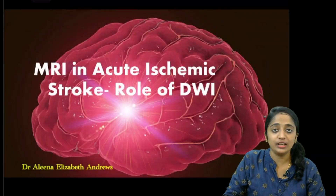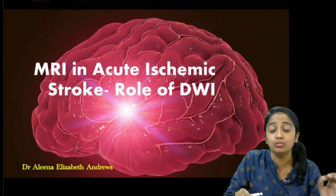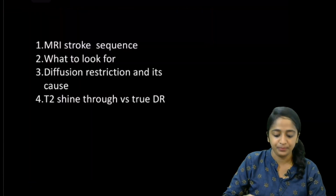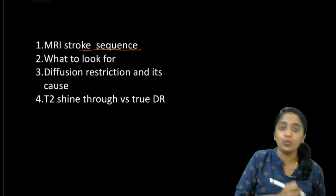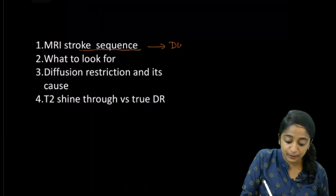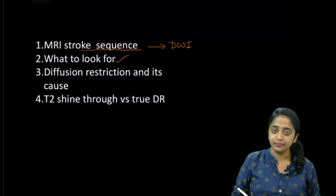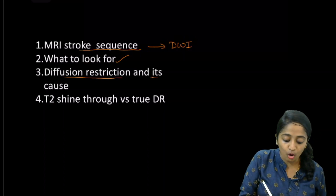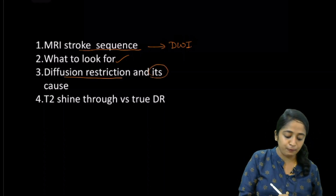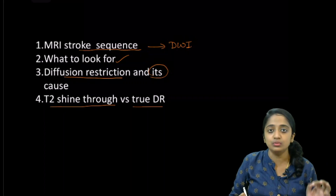Welcome back to lecture 2 in the stroke imaging series. In this lecture, we shall discuss the role of MRI in acute stroke — specifically the role of diffusion-weighted MRI. We will discuss the MRI stroke sequence of choice, what to look for in diffusion-weighted imaging, what is meant by diffusion restriction and its causes, and finally how to differentiate between T2 shine-through and true diffusion restriction.